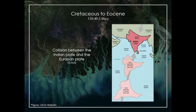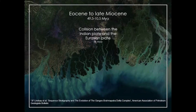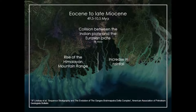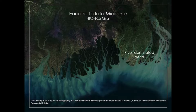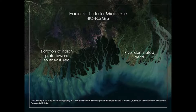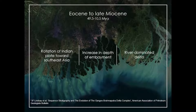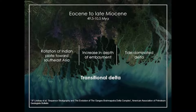As we can see in the figure, the Indian plate ended up colliding with the Eurasian plate about 55 million years ago. Due to the collision, the Himalayan mountain range began to rise and rainfall increased. As a result, both the clastic sediment and stream influx were enhanced. It drastically increased the delta growth and contributed to the growth of Bengal deep sea fans. Up to this point, the delta was river dominated. But at this stage, the Indian plate rotated towards southeast Asia, which increased the depth of embayment of the Bay of Bengal and the delta became tide dominated. It is termed as the transitional delta. To summarize, the abrupt morphological changes of the delta were a direct response to the collision and the rise of the Himalaya.